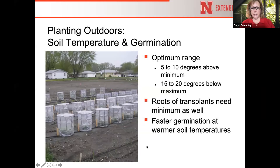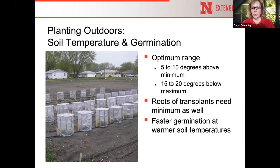The optimum soil temperature for seed germination is about 5–10 degrees above the minimum and 15–20 degrees below the maximum for that crop. This also applies to transplants: if you put a transplant in soil that's too cold, the roots won't grow well. Think of a tomato plant put in the ground too early in spring — it just sits there, roots shivering. As long as we're below that upper threshold, the warmer the soil, the faster germination will be.